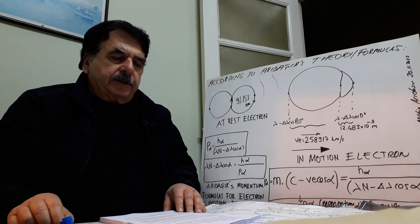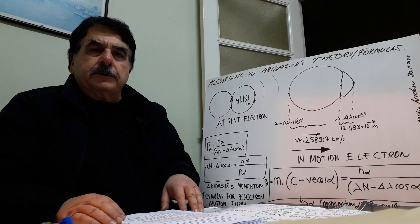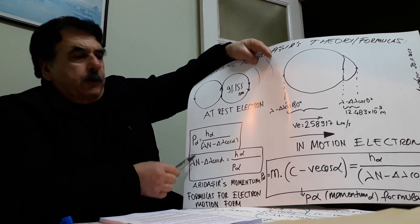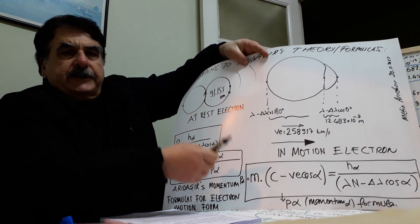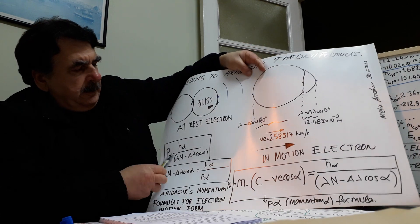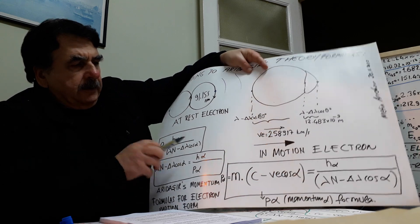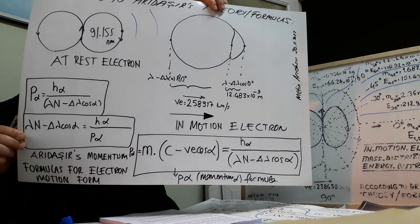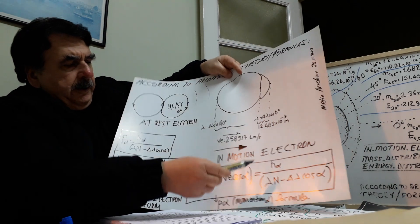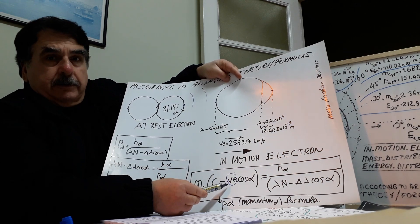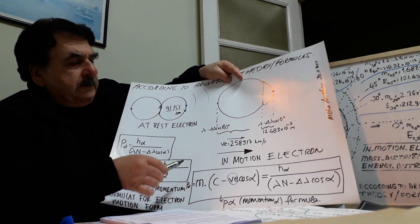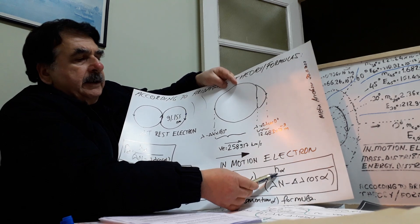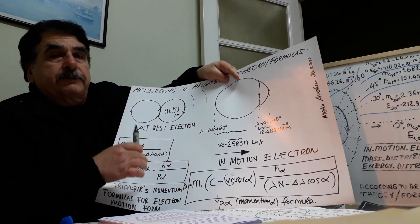So even if electron velocity is equal to zero, the momentum will not be zero. This is my momentum formula for any point on the electron motion form, whether it is at rest or in motion. For instance, this is the main momentum formula. If electron velocity is equal to zero, there is still momentum for the electron motion form. Delta lambda cosine alpha is zero also, and Planck's constant doesn't change if the electron motion form is not relocating.